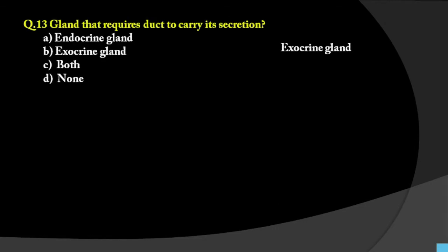Question number 13: Glands that require a duct to carry secretion. Options are endocrine, exocrine, both, or none. Endocrine glands secrete directly into the blood. Exocrine glands use a duct to provide secretion. For example, mucous glands and salivary glands in the mouth provide secretion through a duct under the tongue. Therefore they are called exocrine glands, and the answer is exocrine.